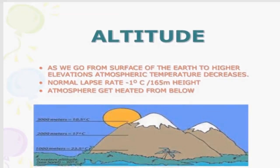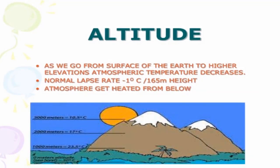Our third most important factor affecting our weather is altitude. Altitude means height from the sea level. As we go from the surface of the earth to higher elevations, we see a decrease in temperature. In short, the higher the altitude, the colder the temperature.